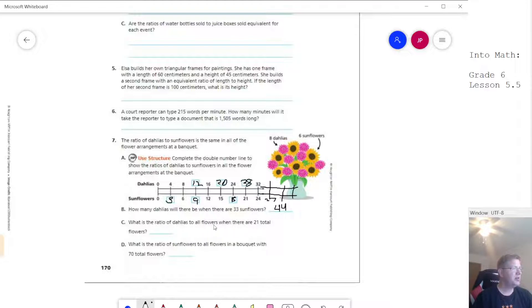Ratio to all flowers when there are 21 total flowers. So this one would be using this part right here. We would have 12 Delilahs when we have 21 total flowers. That's the only other weird trick that they may ask for using one of these.